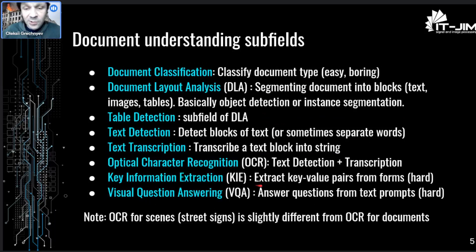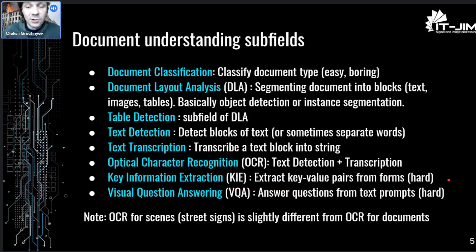Now the hardest tasks in document understanding: information extraction, where you extract key-value pairs from forms; and visual question answering, where you answer questions about documents from text prompts. These last two tasks are very hard and typically only solved on some particular style or form, like receipts, and not on generic documents as humans can. Also note that OCR for scenes, such as reading street signs, while similar to OCR for documents, can be different in technical details.